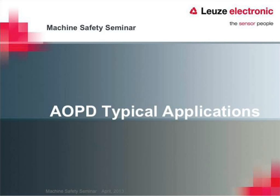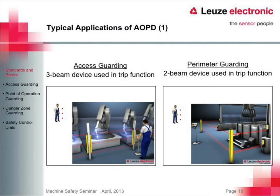Now we'll look at some typical AOPD applications. An AOPD — active optoelectronic protective device — is typically a light curtain, multi-beam, or safety scanner. There are three typical applications: access or perimeter guarding, danger point guarding, and danger area guarding. For perimeter guarding, we would use a multi-beam. It needs to be far enough away from the hazard that we don't have to worry about depth of penetration issues. We're basically looking for a trip device to make sure nobody walks into the area. We can do it cheaper with a multi-beam than a light curtain because it uses fewer optics, and we can go farther distances, making a big perimeter around the entire dangerous area with one device bounced off a couple of mirrors.